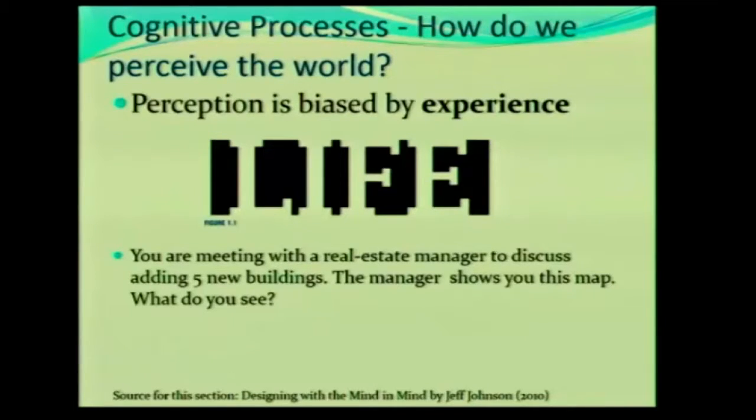And by the way, anyone who has seen this before, you are not allowed to answer. So here's the scenario. You work at a university, right? You are in administration, and it just so happens that you are part of a team that's helping design the expansion of the university. Kind of like what's happening at FIU, where we have a lot of buildings going up, right? So you're in a meeting with a real estate manager at the university to discuss adding five new buildings to the campus. So the manager goes and shows you this map. Now tell me what you see.